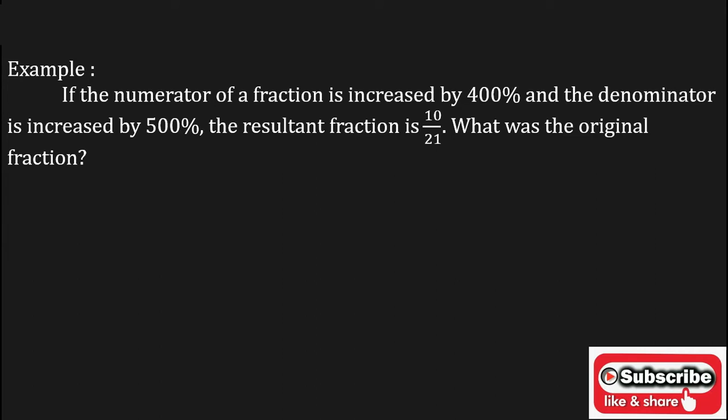If the numerator of a fraction is increased by 400 percent and the denominator is increased by 500 percent, the resultant fraction is 10 upon 21. What was the original fraction?